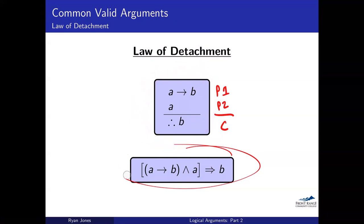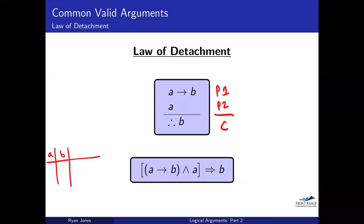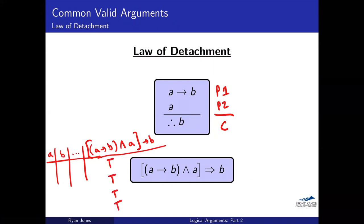You could do a truth table for this if you wanted to — work out the entire truth table starting off with A and B and going down the line. You'd end up getting all trues: true, true, true, true. I encourage you to work through that so you can see that this is always the case.